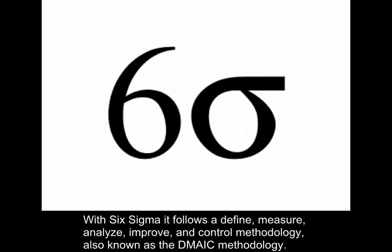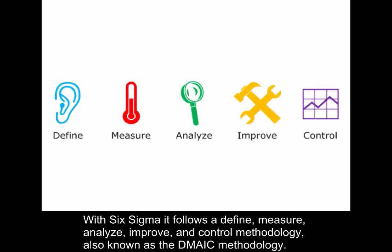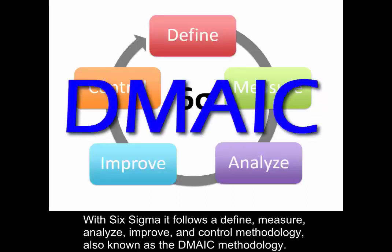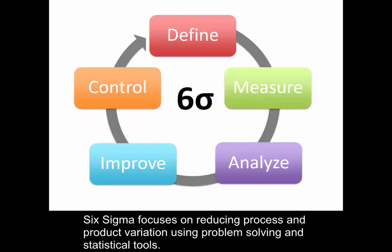We're going to follow the Six Sigma methodology. With Six Sigma, it follows the Define, Measure, Analyze, Improve, and Control methodology, also known as the DMAIC methodology. Six Sigma focuses on reducing process and product variation using problem solving and statistical tools.